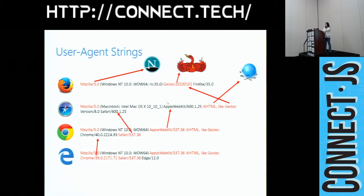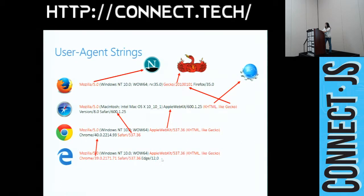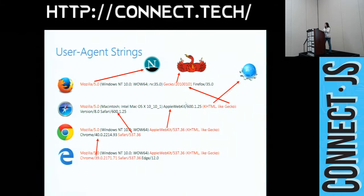We should use feature detection — we'll talk about that in more detail. This diagram shows how each of the major browsers picks up the user agent string and how they support each other. One thing to mention: Edge's user agent is made fully compatible with Chrome, except it has 'Edge/12.0' to distinguish it. So all sites running properly on Chrome should run properly on Edge as well. But really, using user agent strings is not a good way of doing things.